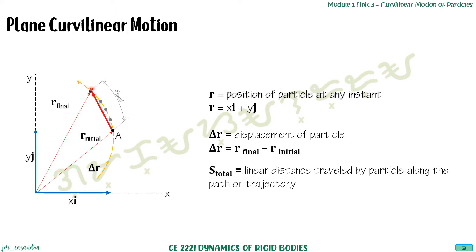Take note that the distance along the curved path of our motion is what we call S total, or the linear arc distance traveled by the particle along the trajectory. S total is different from delta R.